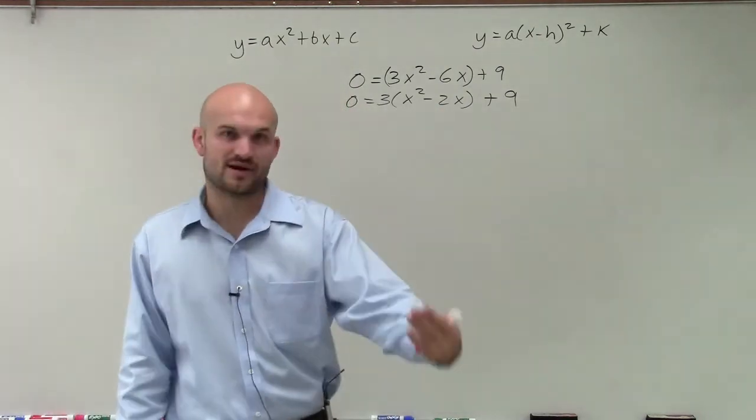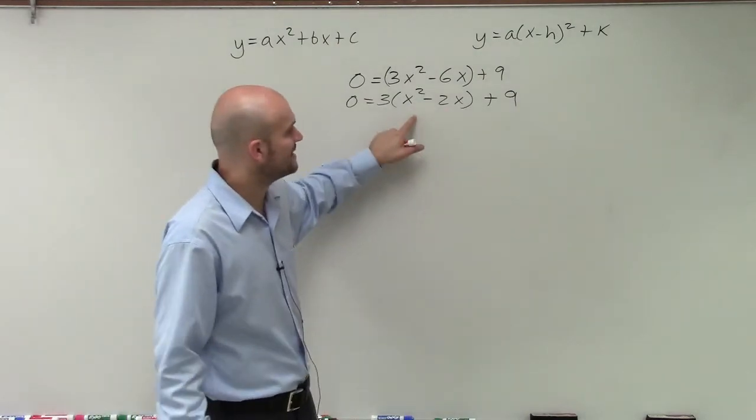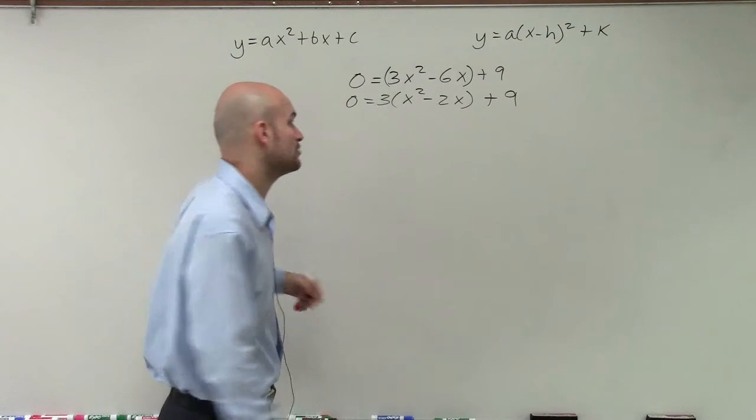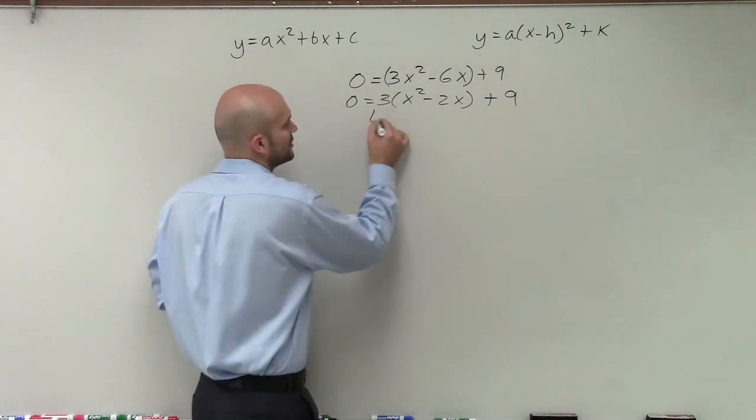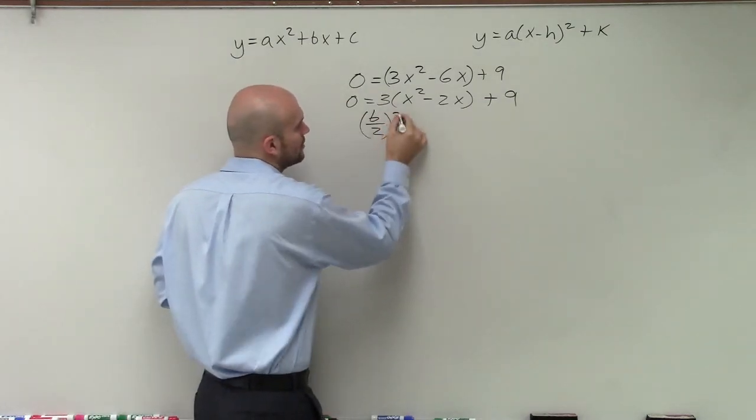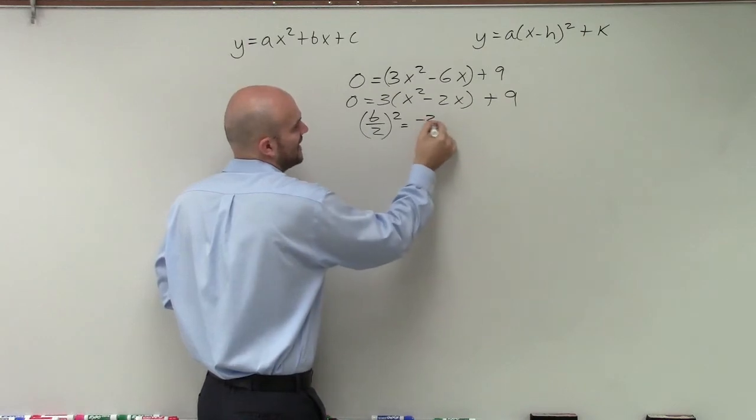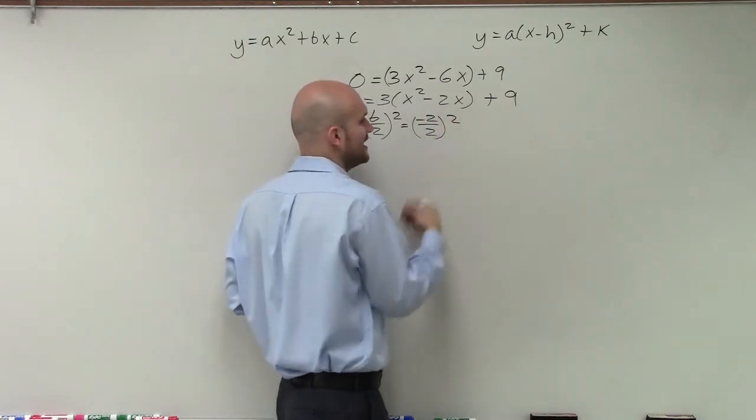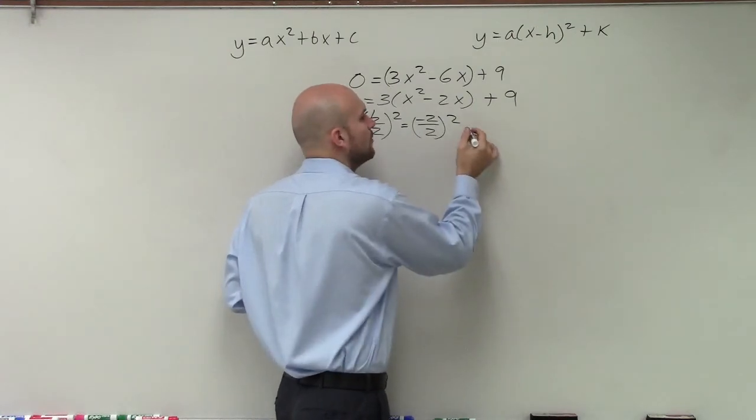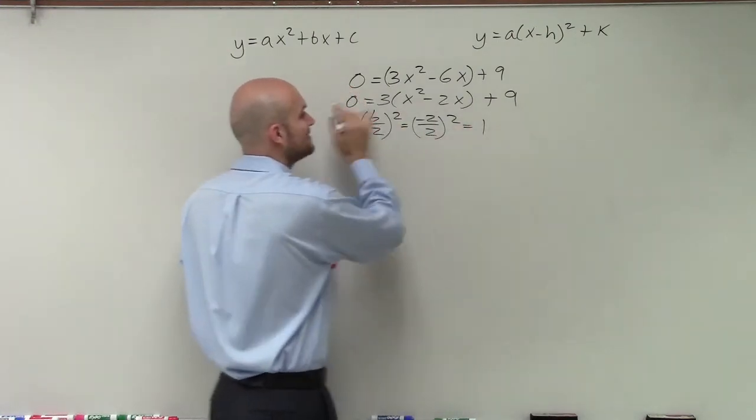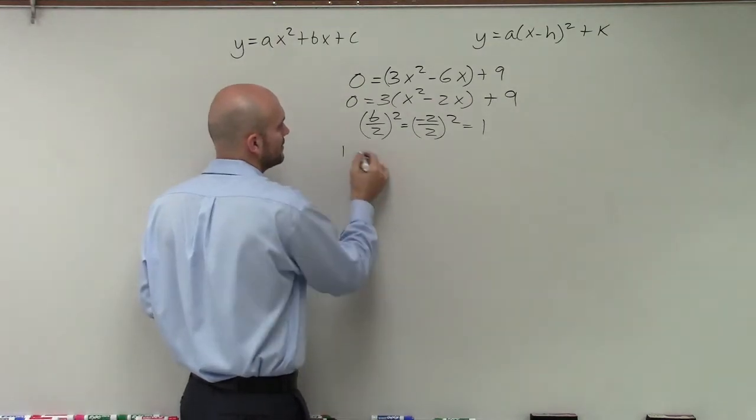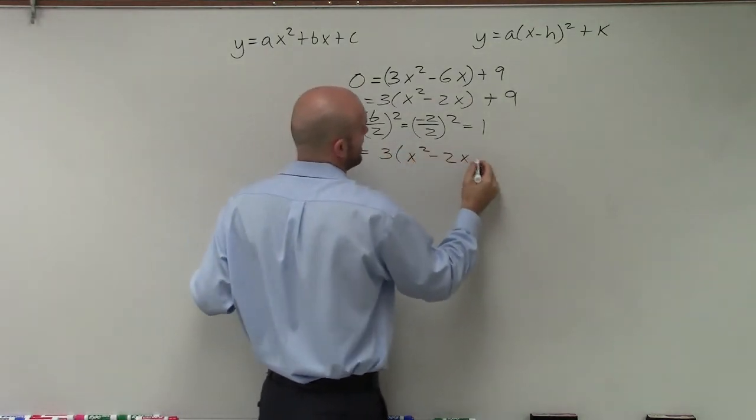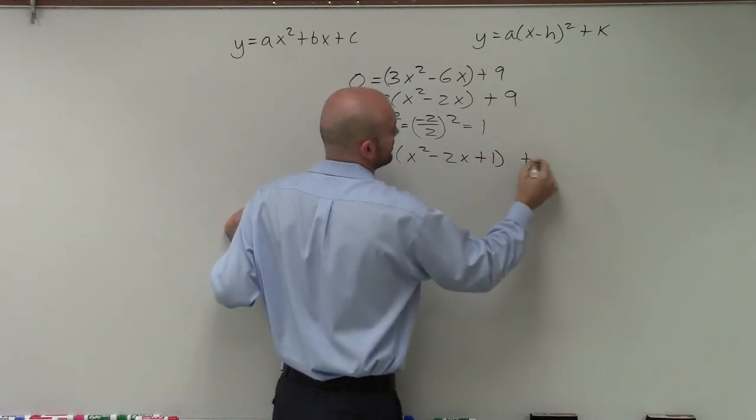Now I go through the exact same process I did before. I need to make this a perfect square trinomial so I can factor it down to a binomial squared. So again, we're going to do our b divided by 2 and square it. So in this case, I have negative 2 divided by 2 squared. Negative 2 divided by 2 is negative 1. 1 squared equals 1. So now I add this to both sides. So I add a 1 equals 3 times x squared minus 2x plus 1 plus 9.